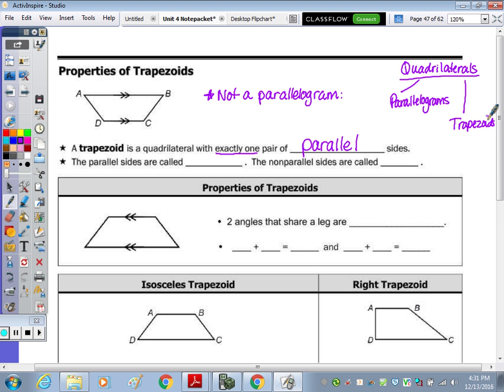Okay, the parallel sides of a trapezoid are called bases. So in this picture here, it's noted with the arrows that AB is parallel to CD. So AB is a base, and CD is a base. The non-parallel sides are called legs. So this is a leg, and this is a leg.